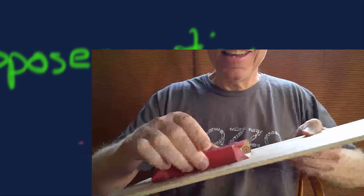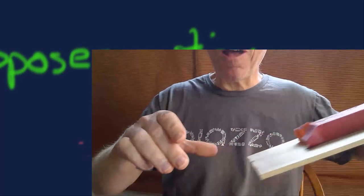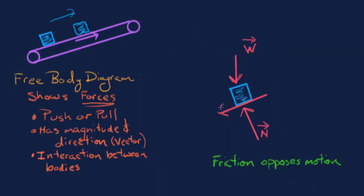Therefore, the friction from the belt acting on the block is upward and to the right. We had the direction of friction wrong. Let me erase that — the friction force should be pulling upward and to the right. I'll label it F with an arrow above it. This tells me my earlier reasoning was incorrect: friction doesn't simply oppose motion — it opposes relative motion, the sliding action between the two surfaces. And there you have it — that's the free body diagram of the ice block on the conveyor belt.